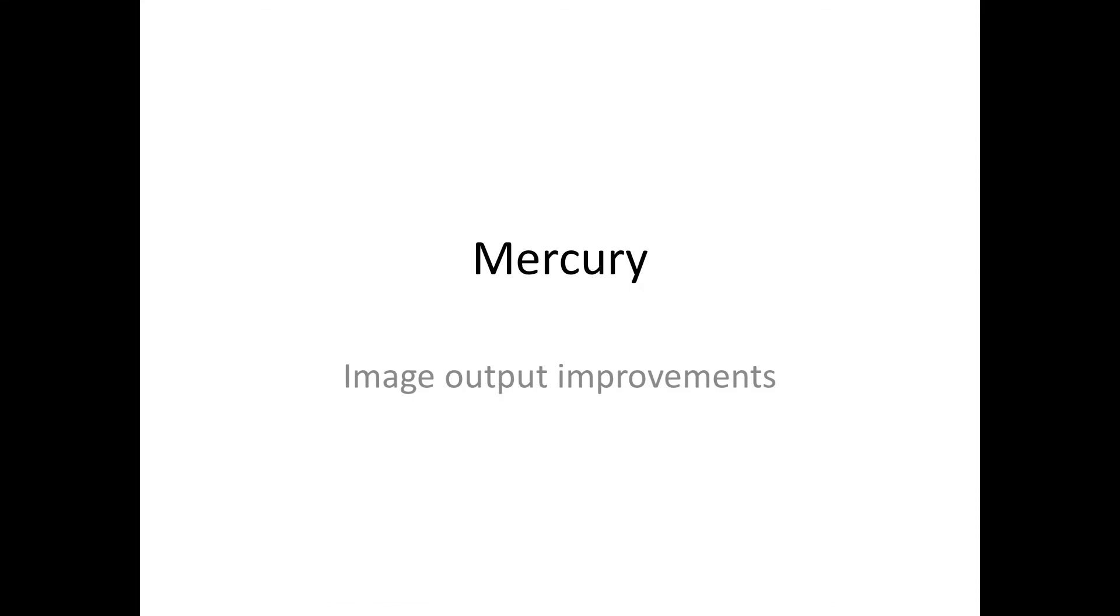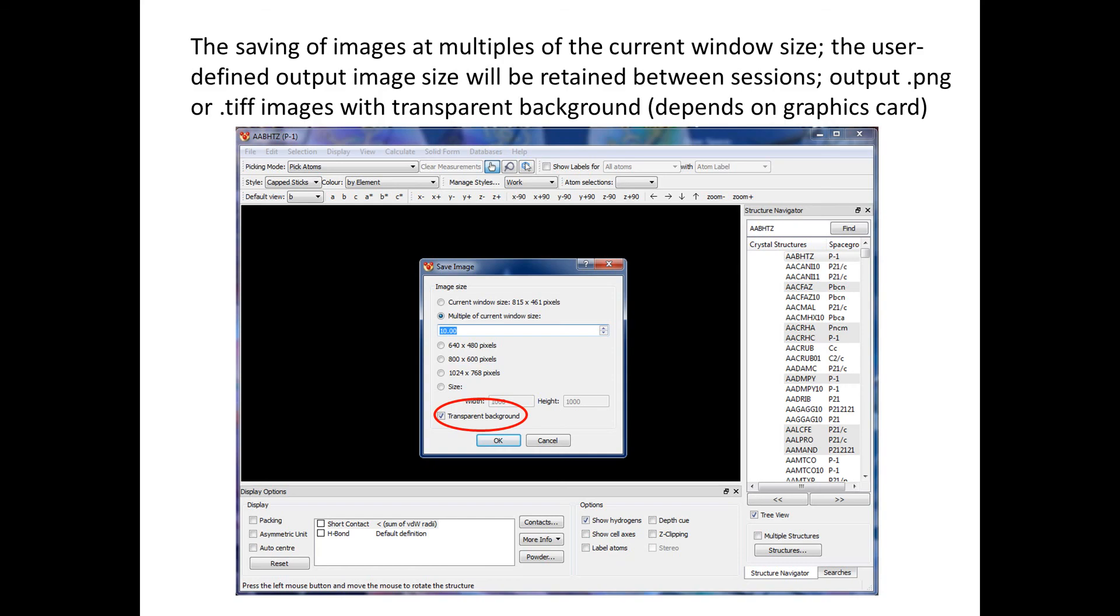Mercury image output improvements. The saving of images at multiples of the current window size. Now it is possible to do this via the save image option. There are different sizes that can be chosen, including multiple of current window size—you can go up to 10 times. There is also the option to output images with a transparent background.